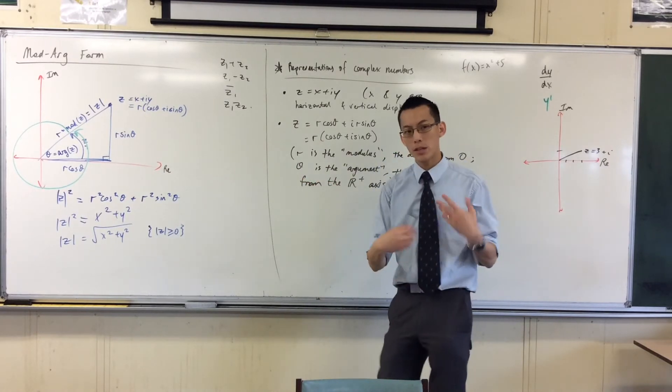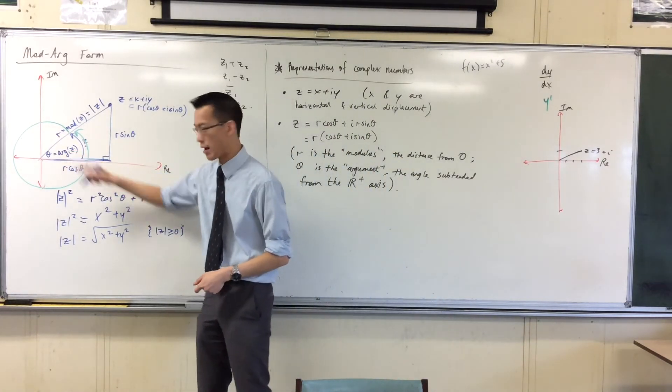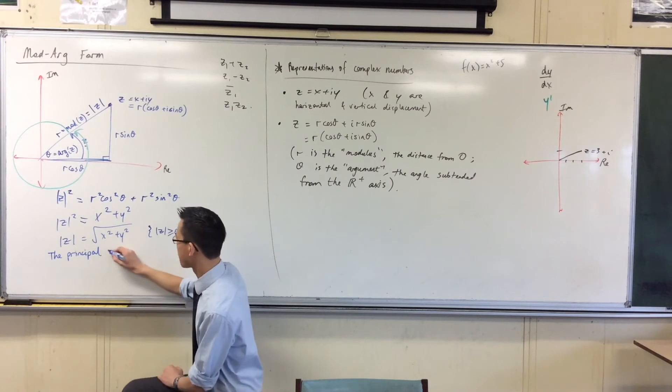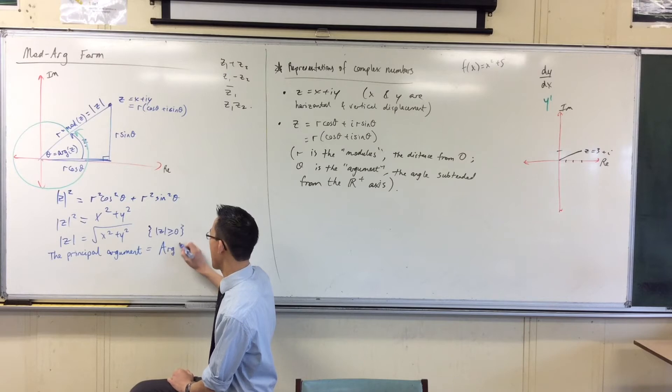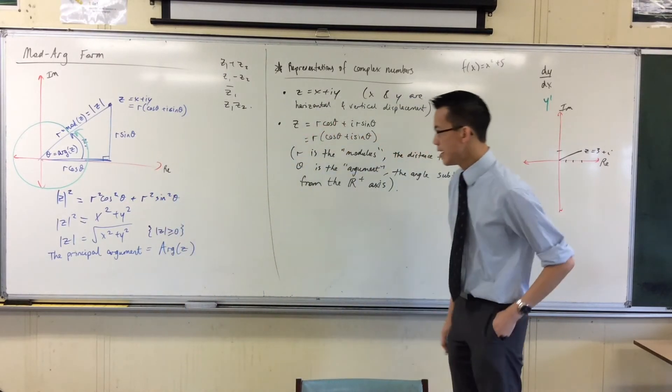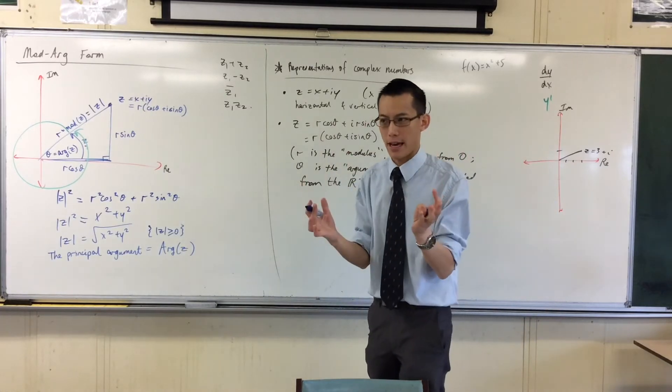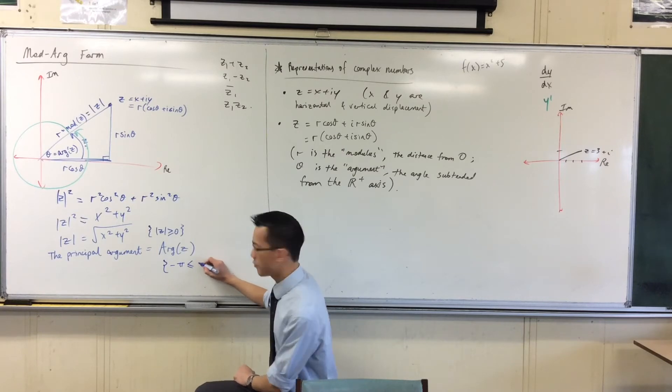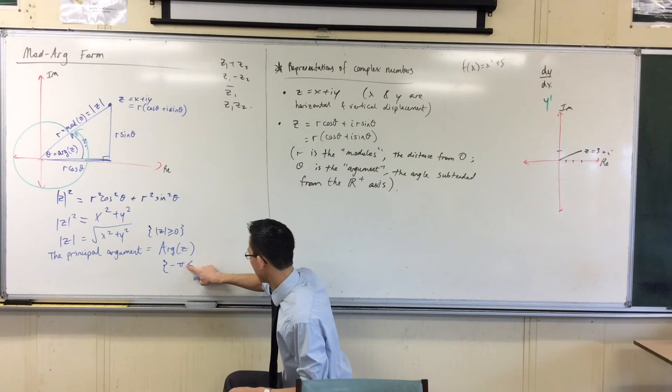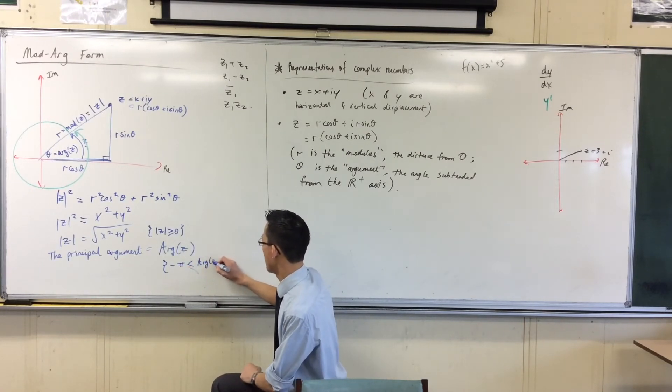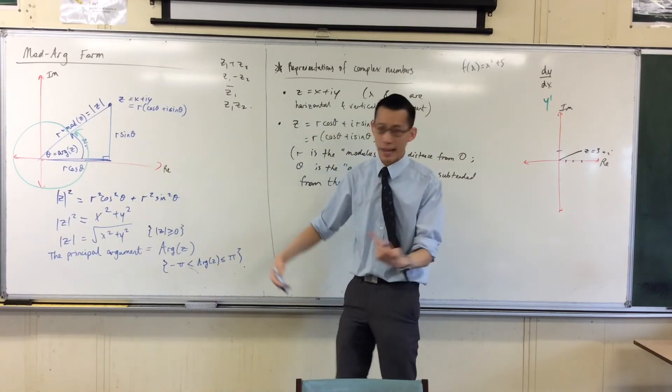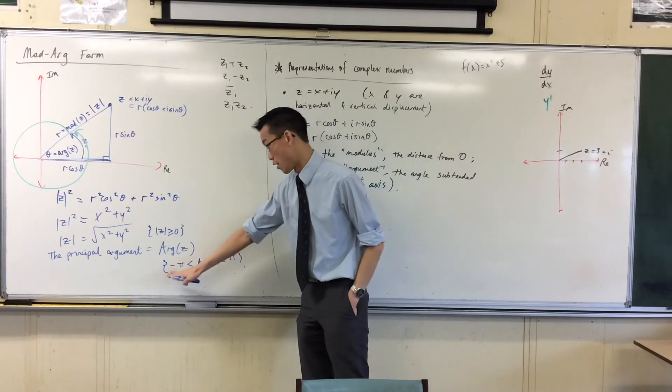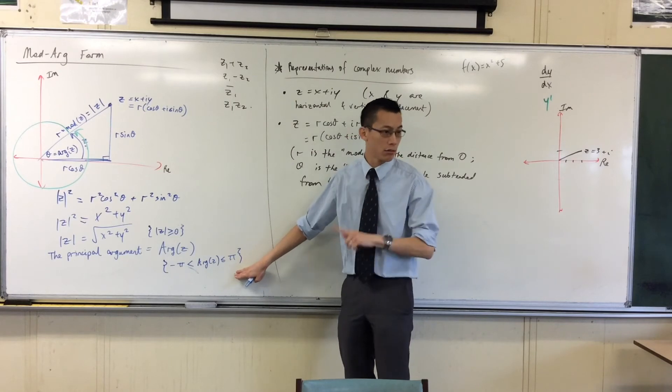So what we do is we define - and this tends to be written with a capital A. And what this means is, I don't just want any argument that will get me there. I want a particular argument. I want it to be restricted between, this is a bit interesting, from negative pi - I've got to get my boundary the right way - no, I don't want negative pi. I want to include positive pi. Now we're used to thinking of things in terms of like 0 to 2 pi. For reasons that will become clear as we go a bit further, we're going to go from negative pi to pi, and it's inclusive of the positive value.